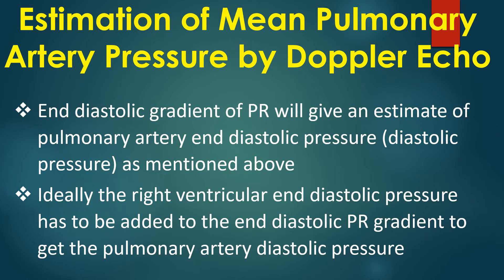Ideally, the right ventricular end-diastolic pressure has to be added to the end-diastolic PR gradient to get the pulmonary artery diastolic pressure.